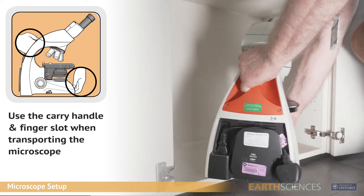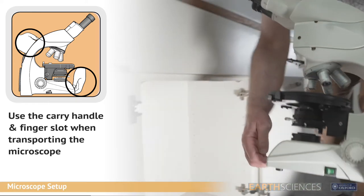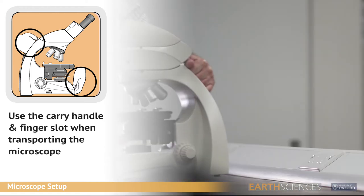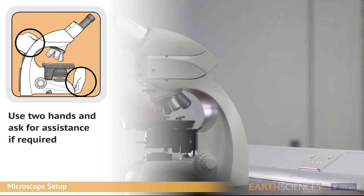At the back of the microscope stand is the orange instrument carry handle. This must be used in conjunction with the finger slot at the base of the front when moving the microscope. Always use two hands when transporting or moving the microscope onto the desk for use.